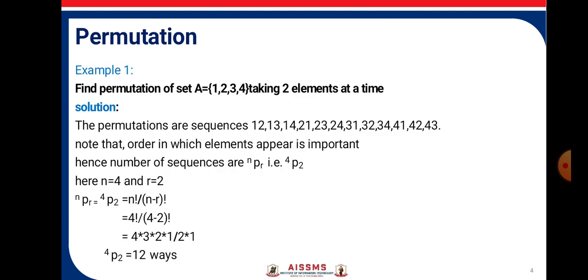Consider example. Find the permutation of set A={1,2,3,4} taking two elements at a time. The permutations are sequences: 1,2; 1,3; 1,4; 2,1; 2,3; 2,4; 3,1; 3,2; 3,4; 4,1; 4,2; 4,3. Note that order in which elements appear is important.